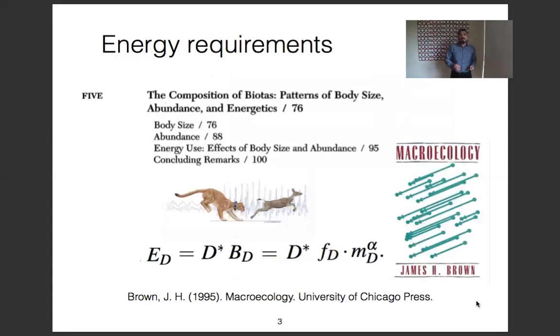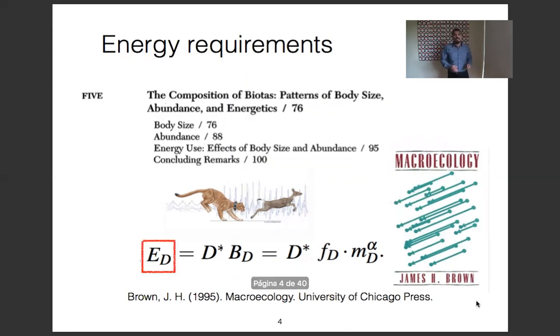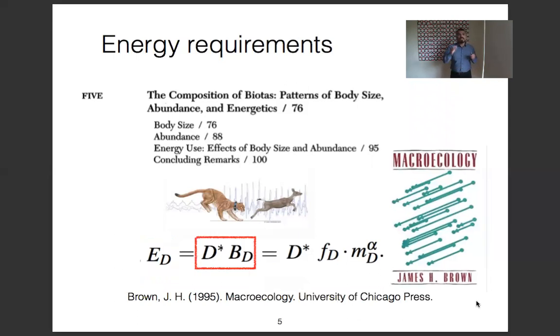One phenomenon that we can study is energy requirements. Through a simple calculation we can estimate the energy and nutrient use rate per area for each species in a local community. We will denote this quantity by EG. Therefore, EG is the product of the population density D and the average individual metabolic rate. The notion appeared in chapter 5 of James Brown's book, which partially inspired this work.